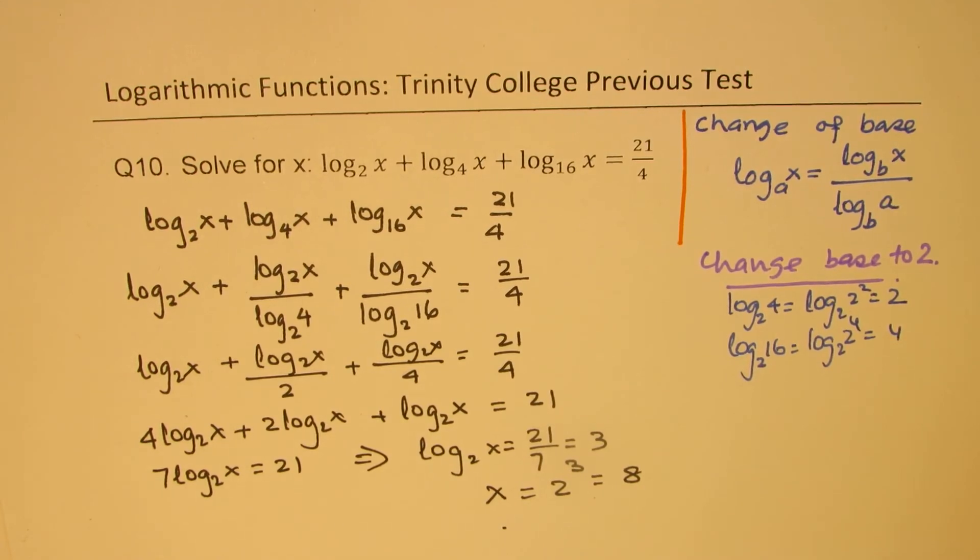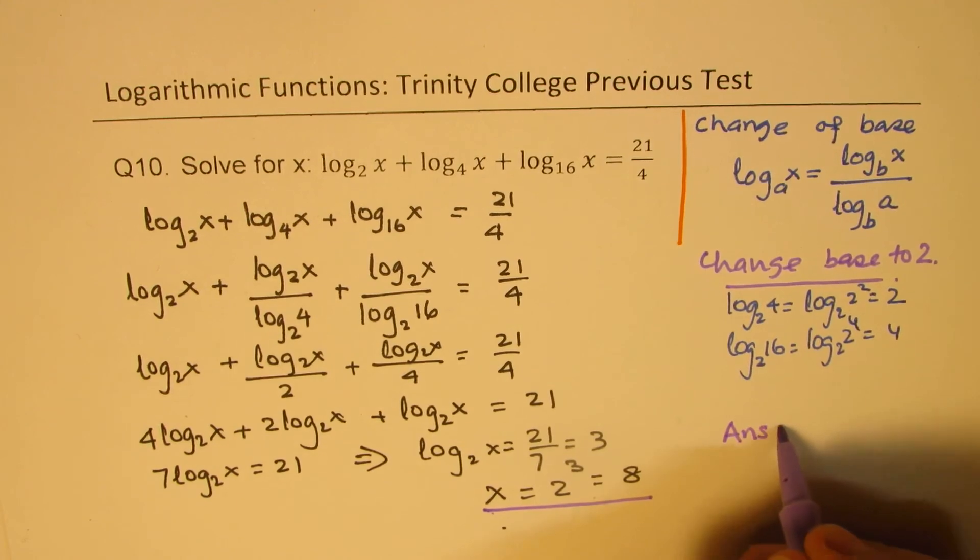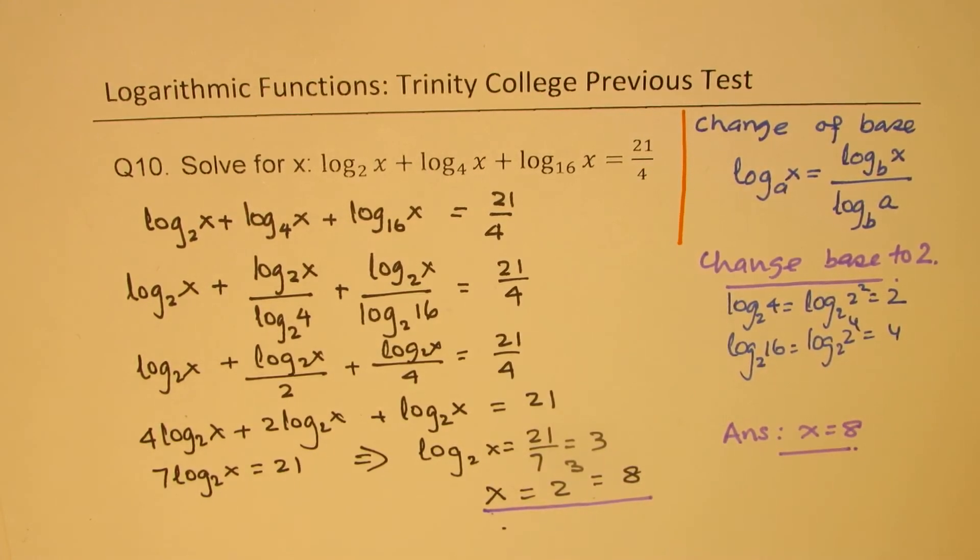So we have solved for x which should be 8. So our answer is x = 8. So that is how we are going to solve this question. I hope it makes sense. Feel free to write your comment, share your views and if you like and subscribe to my videos that would be great. Thanks for your time and all the best.